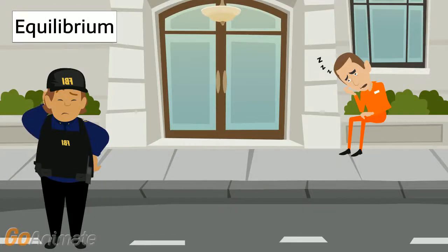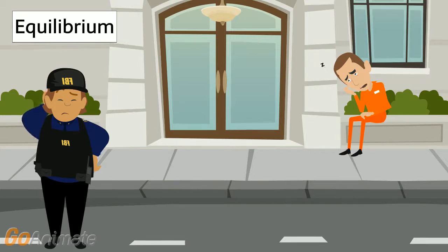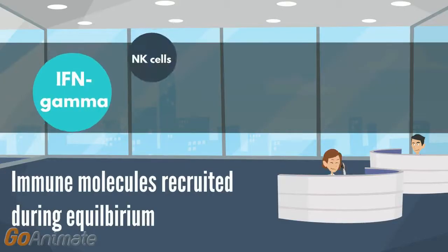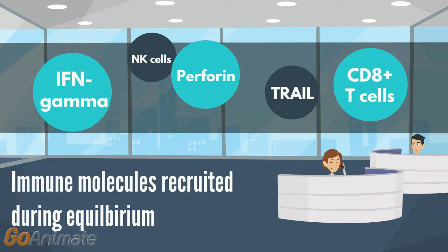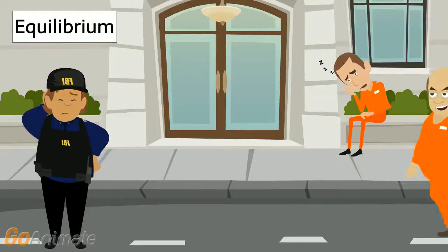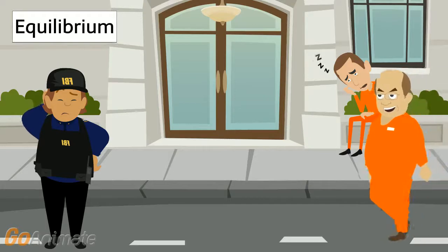The second stage of immuno-editing is equilibrium. This is a temporary state in which tumour cells are hypothesized to remain dormant or continuously evolve by accumulating further changes in their DNA. Simultaneously, the immune system continues to eliminate tumour cells that it recognizes as foreign. This essentially creates a selective pressure on the tumour cells, as only the cells capable of evading the immune system will survive and proliferate.